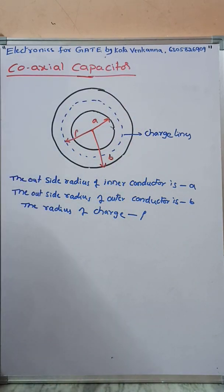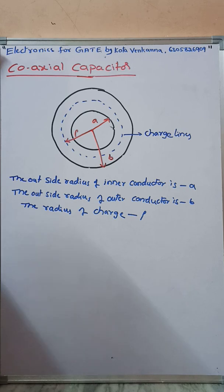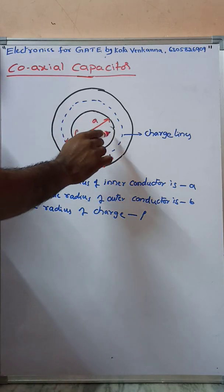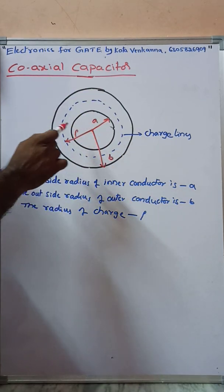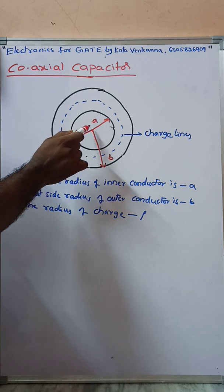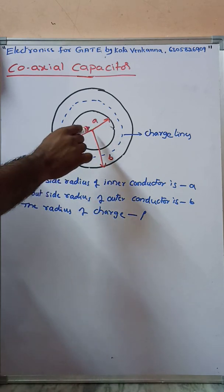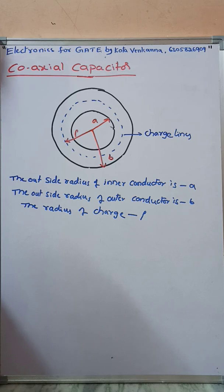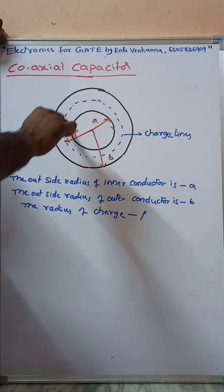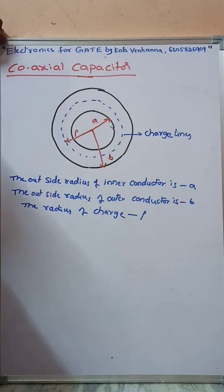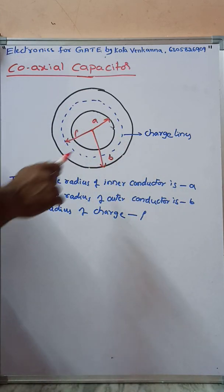A coaxial capacitor is an example of a cylindrical capacitor which consists of an inner conductor and an outer conductor. Here, 'a' is the inner conductor radius and 'b' is the outer conductor radius. In between these two conductors, the charge lines are distributed around the circle.